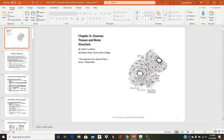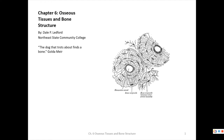Hello everyone, welcome back to a brand new lecture. We're starting a new chapter, chapter 6. This one will be a two-part lecture, focused mostly on some of the major characteristics of bone tissue, and then we'll hit some of the physiology — calcium homeostasis and bone healing fracture.